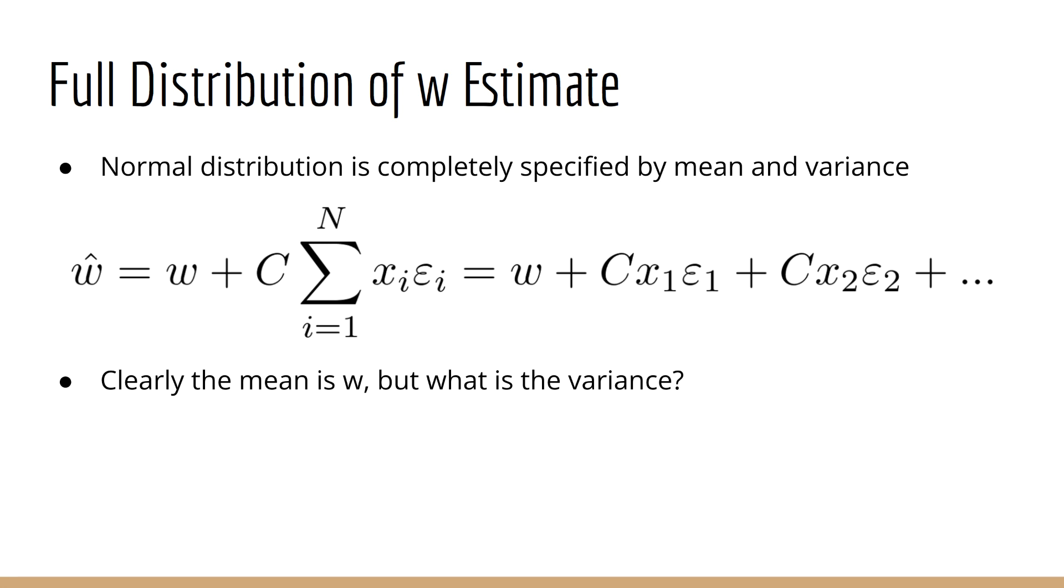As a side note, it's easy to see from this that the mean of w hat is w. If we take the expected value of both sides, we end up with the expected value of the sum of epsilons, which all have expected value 0, so we just end up with w. In any case, let's move on to the variance.